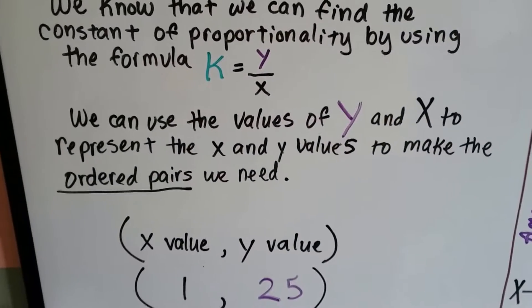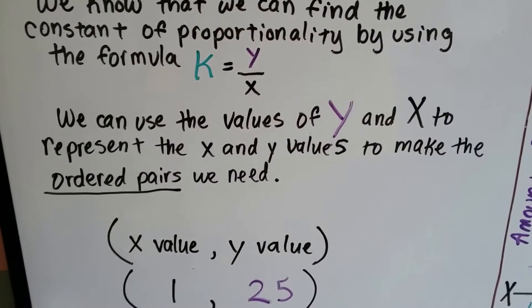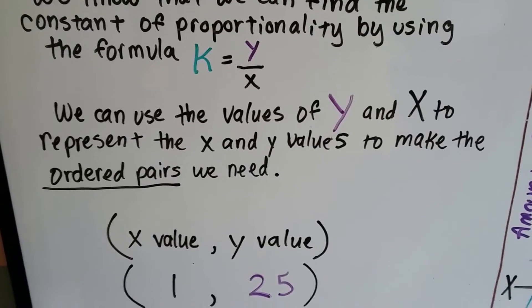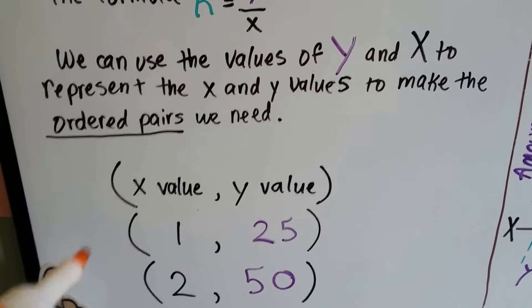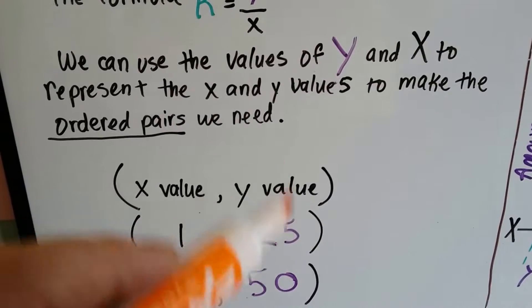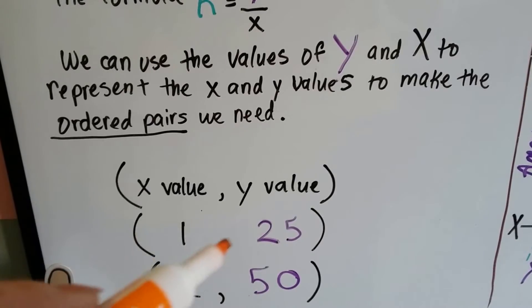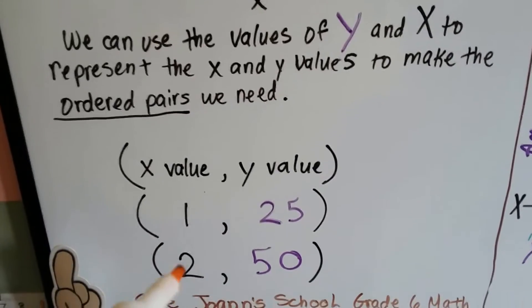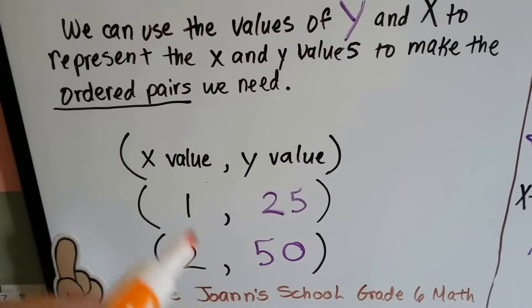We can use the values of y and x to represent the x and y values to make the ordered pairs we need. We could graph it. The first one is the x value, the second one is the y value. So we'd have 1 comma 25, or 2 comma 50. And these are our ordered pairs.